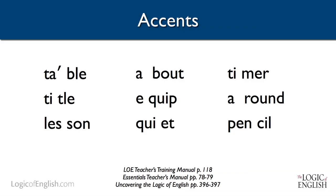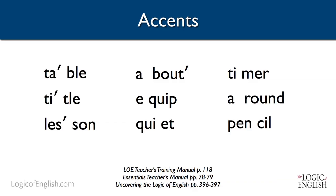How about 'title'? Title. Do you feel how your mouth drops open farther for the 'tie'? How about 'about'? About. Do you feel how your mouth drops open farther on 'bout'? Let's try one last one: 'equip.' Equip. That's right, the accent is on 'quip' — your mouth drops open farther.